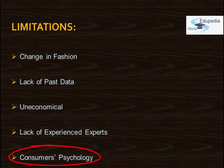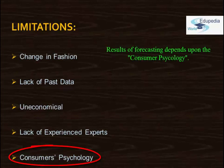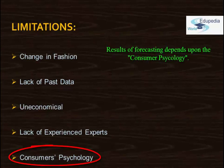Finally, there is consumer psychology. Results of forecasting depend largely on consumers' psychology, and understanding this is itself very difficult. Knowing what the consumer thinks and what they will be choosing in the future is a very complex process. This requires very close coordination between people in the field, regular collection of consumer opinions, and then, based on this data and an understanding of psychology and how mood changes, an expert needs to make a judgment. This itself makes it a very complex process.